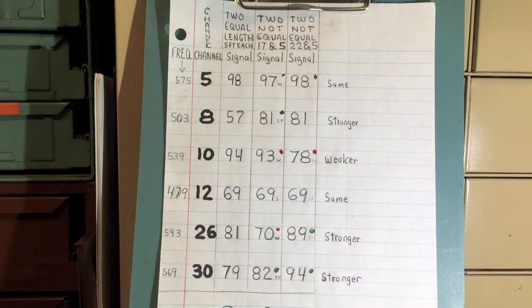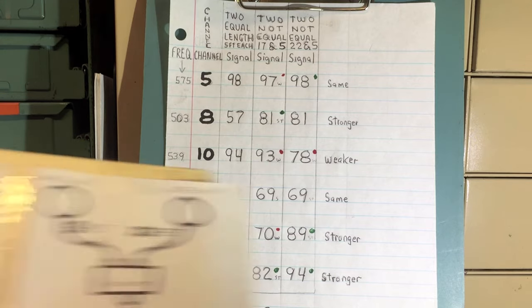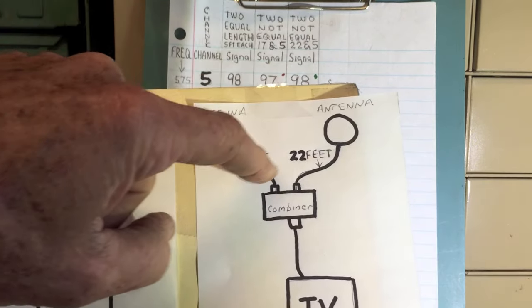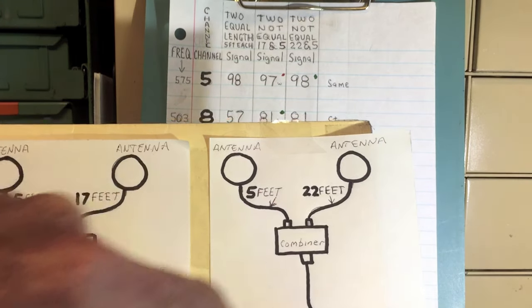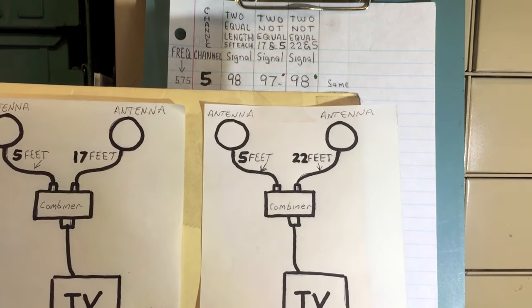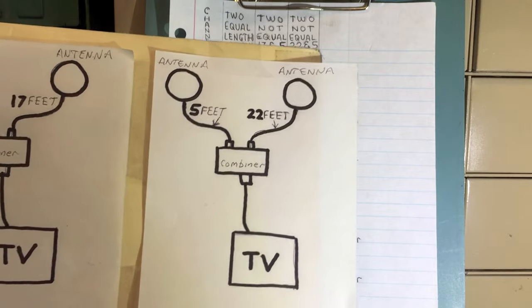My conclusion is that there must be a phase collision from signals coming in at different times and meeting at the combiner because of the wire length, causing a little bit of signal reduction.